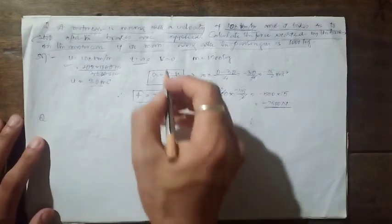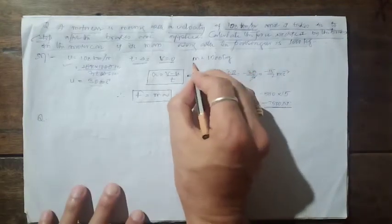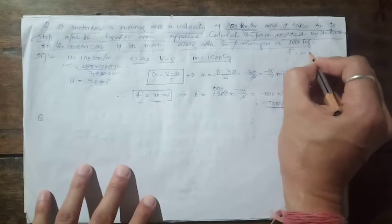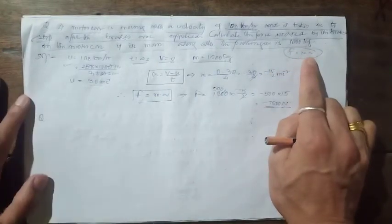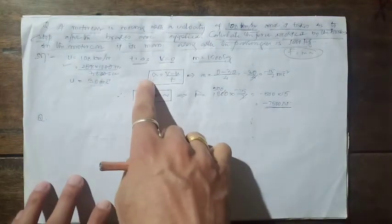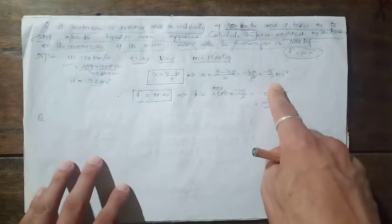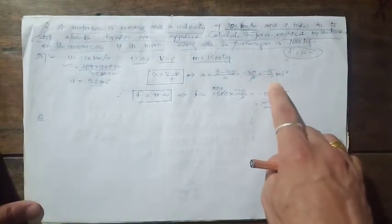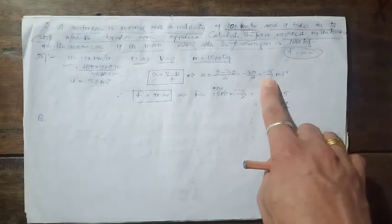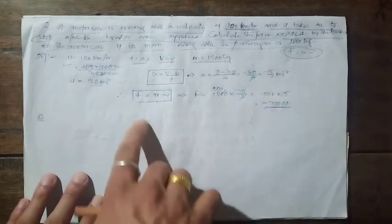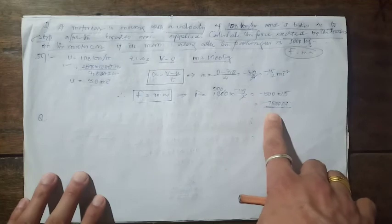Using F = ma, we first calculate acceleration: a = (V − U) / t = (0 − 30) / 4 = −7.5 m/s². The negative sign shows the speed has decreased. Then force = 1000 × (−7.5) = −7500 newton. The negative sign represents a retarding force — the force opposing the car's motion that brings it to rest.